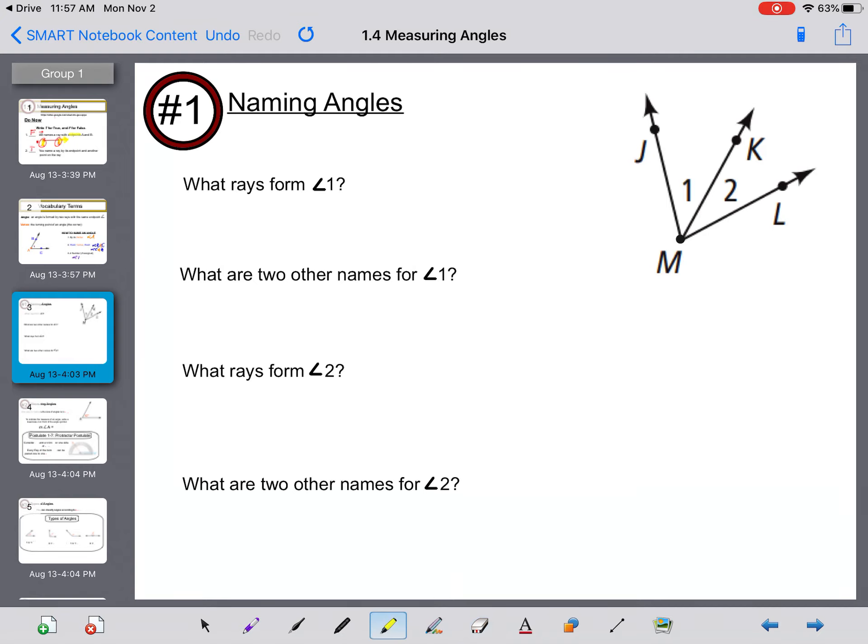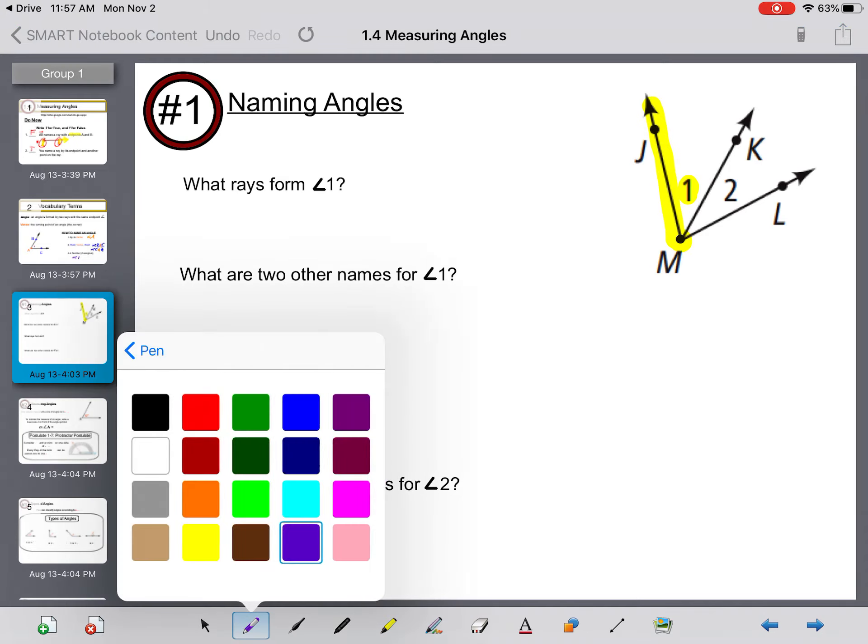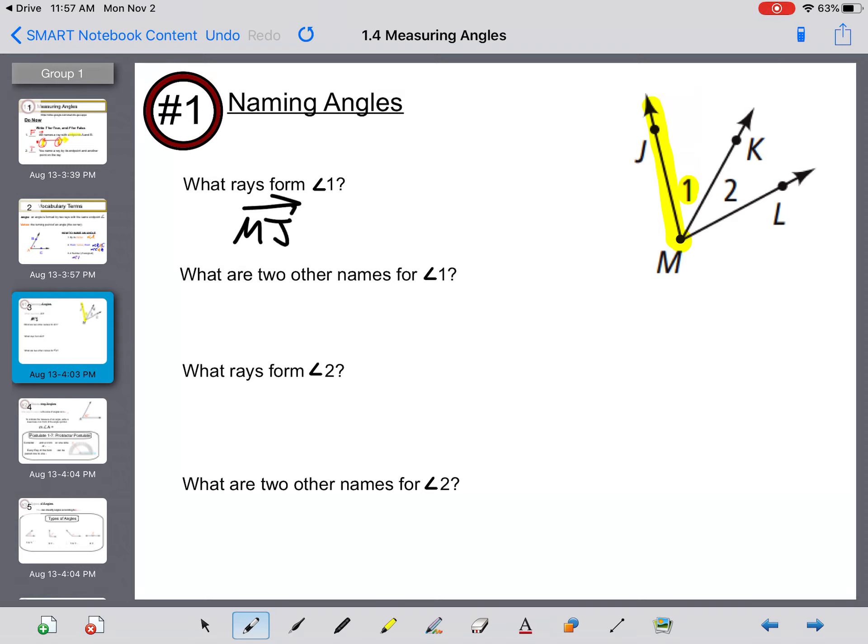What rays form angle 1? Here's angle 1, and the rays that I see are ray MJ and ray MK. What are two other names for angle 1? Like we said on the last page, you can call an angle by its vertex, so angle M. We can call an angle by a point, a vertex, and a point, so JMK or the reverse, angle KMJ.